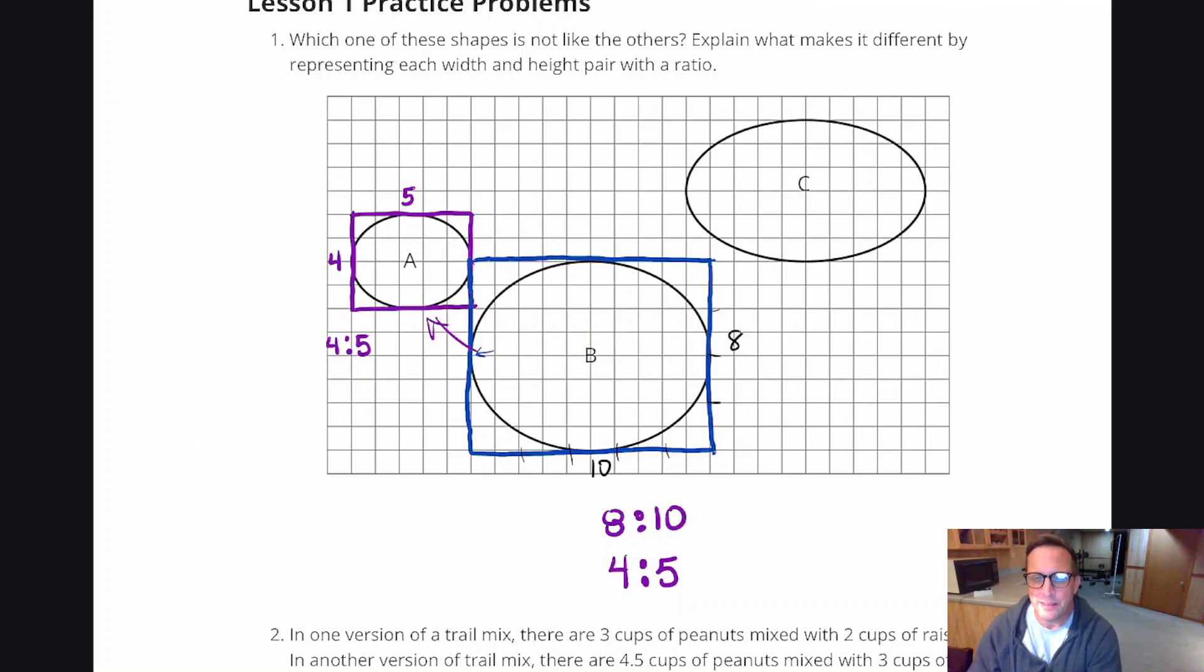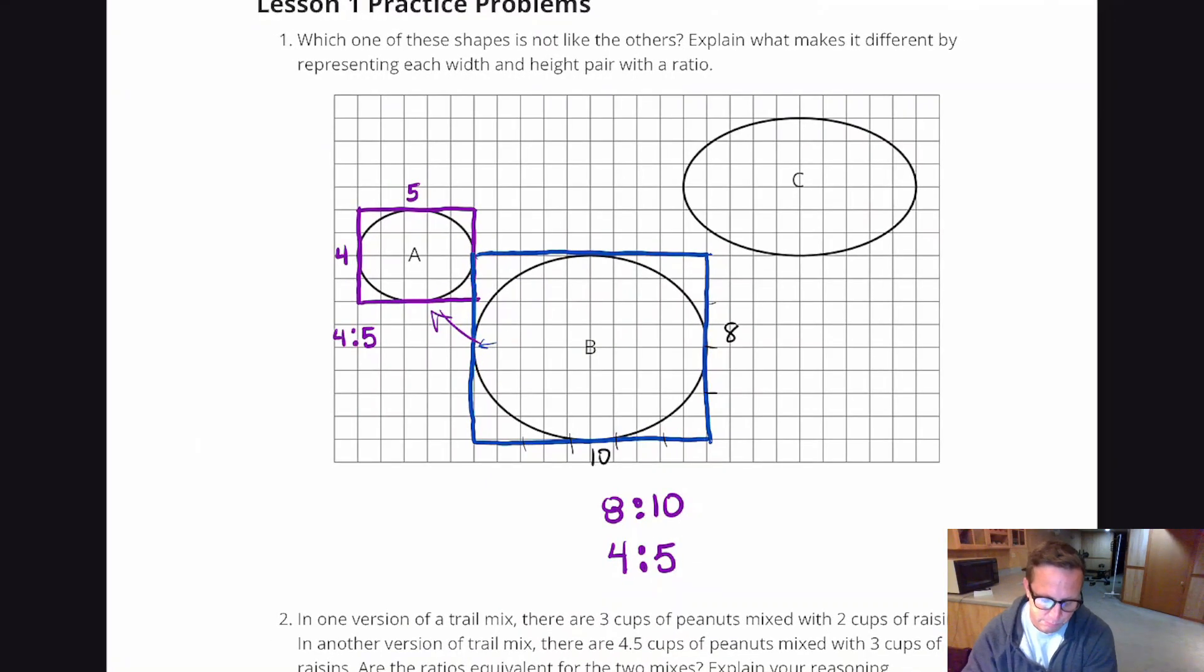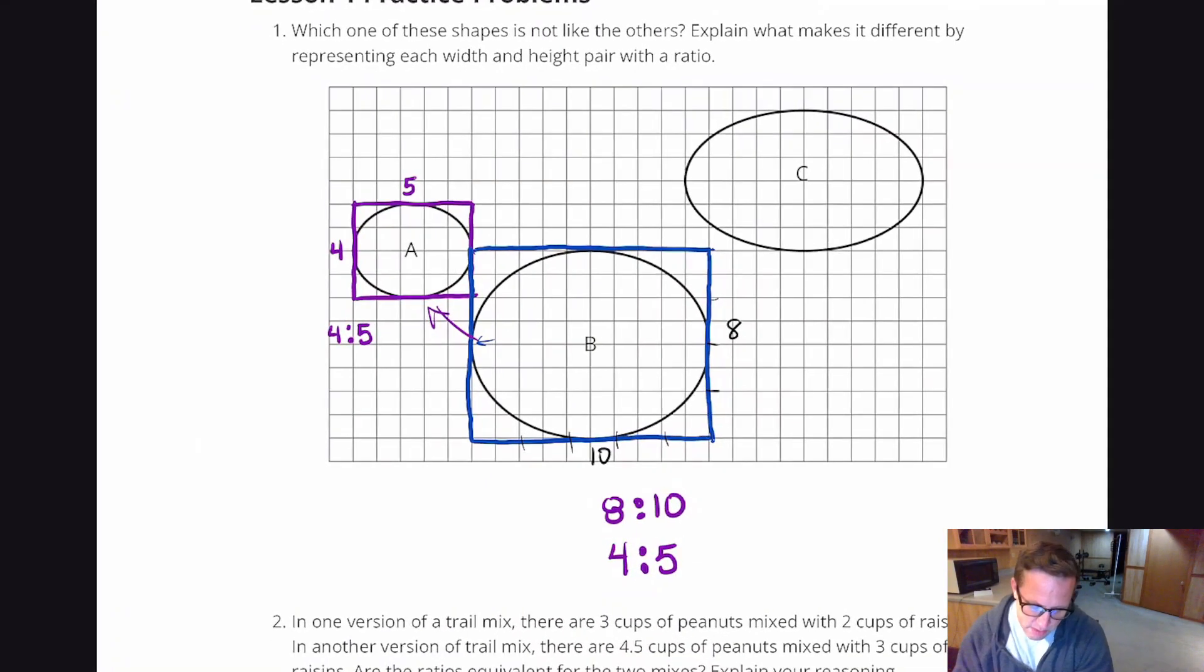And you may have just known it was C just by looking at it. But again, that's not a good enough explanation. You can't just say it looks off. Even though that sometimes can count for some explanations, but not for this one. We have to be able to give a good mathematical reasoning, especially when it says express it as a ratio.